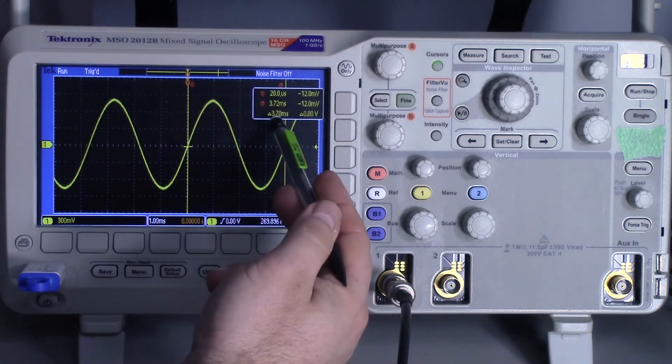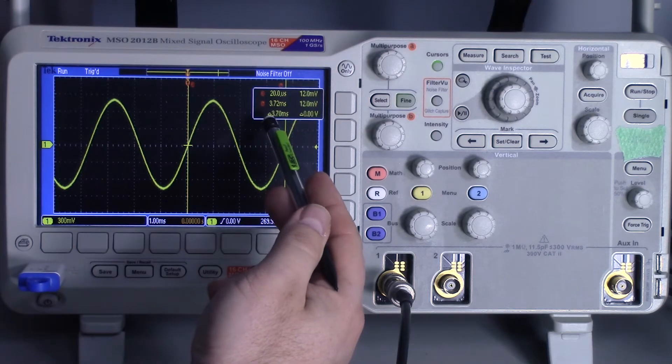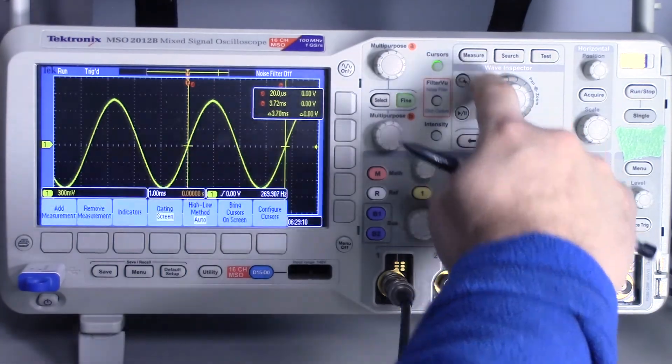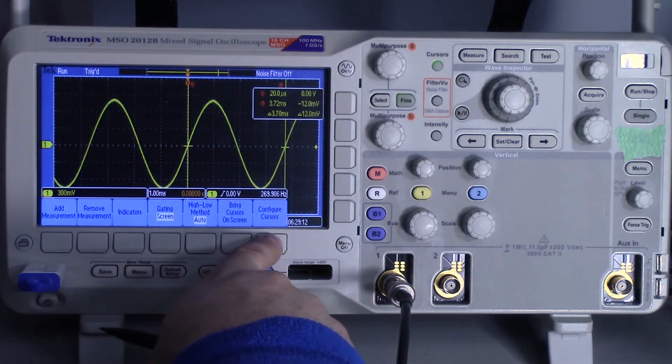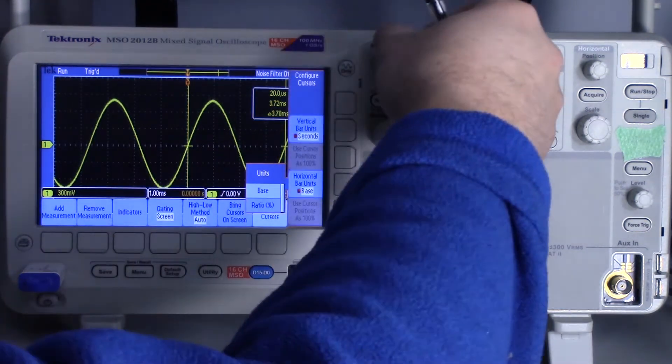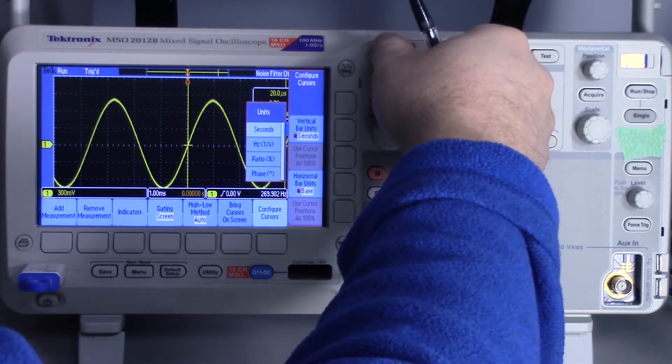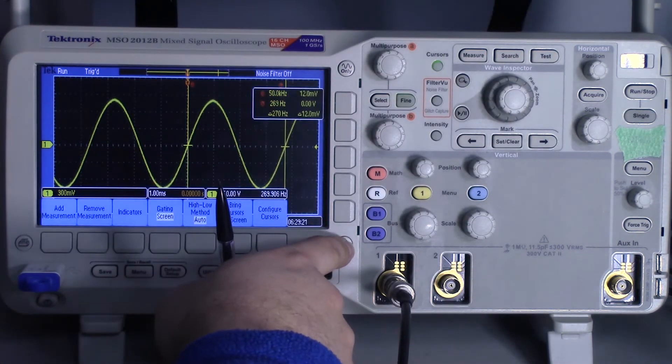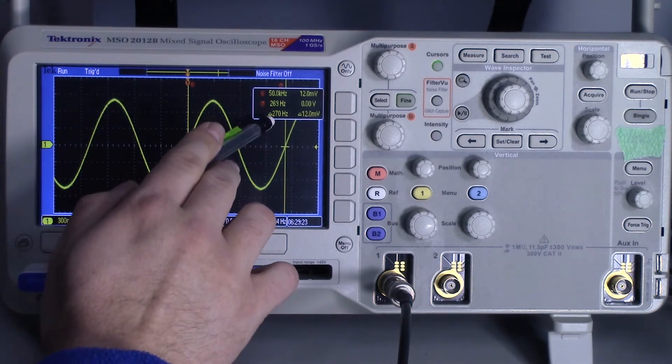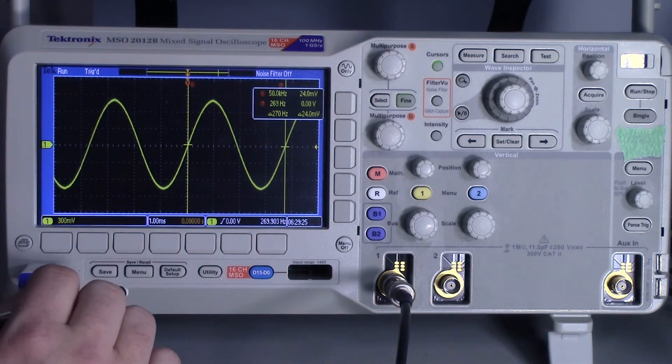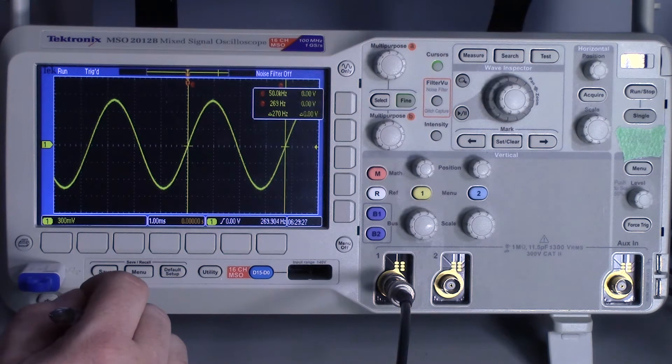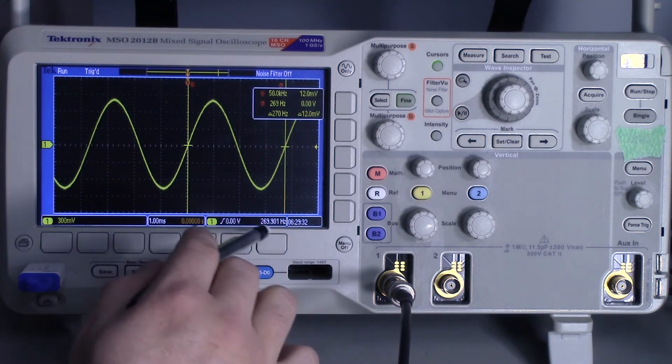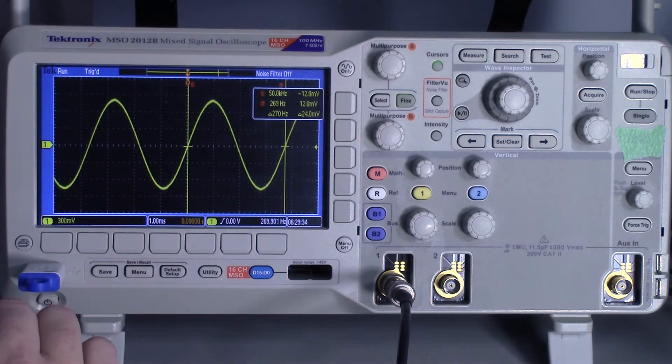Now with this oscilloscope, you can change the information that's displayed of the cursors. To do that, we just go up to measure and configure cursors. And we want to change the channel to hertz. So now it tells us a little bit more directly. It's 270 hertz. And with the function generator, it's coming out at 269.9. And also down here, it tells you a little bit more precisely.